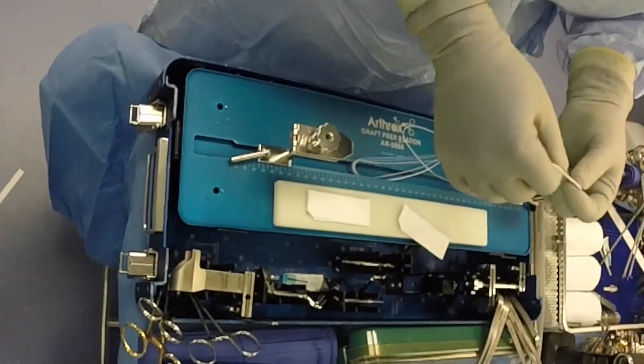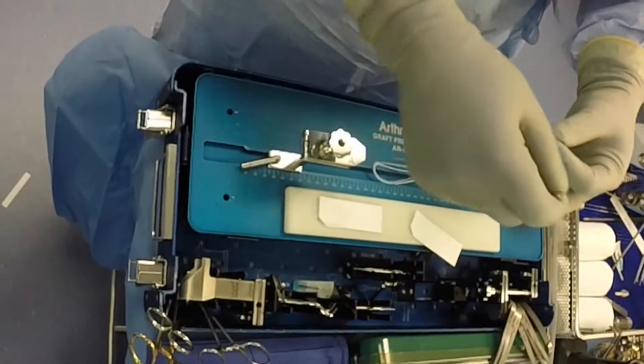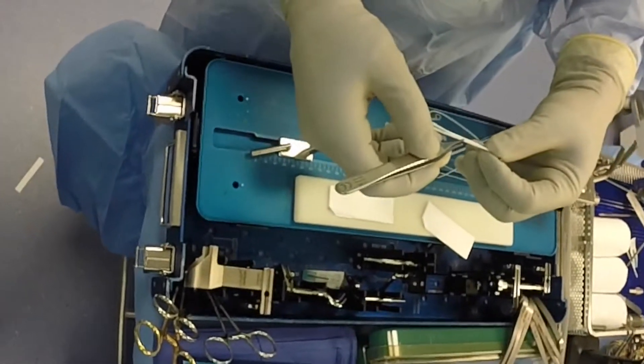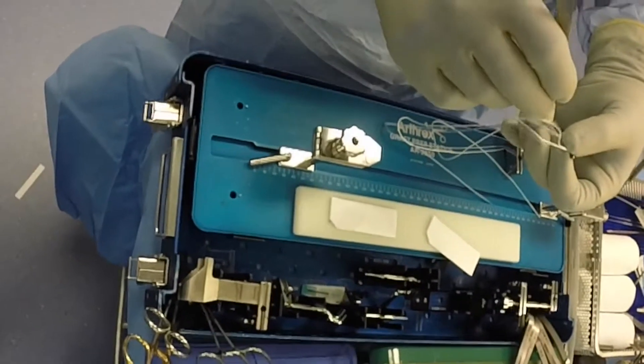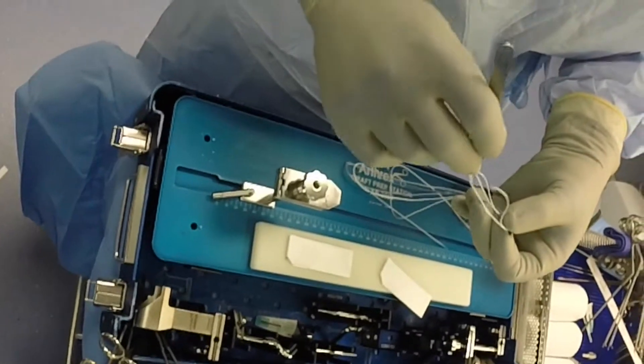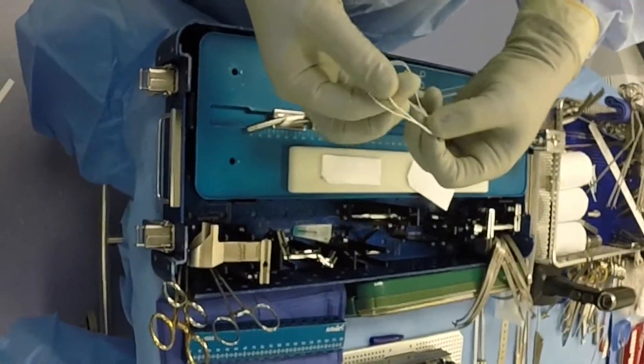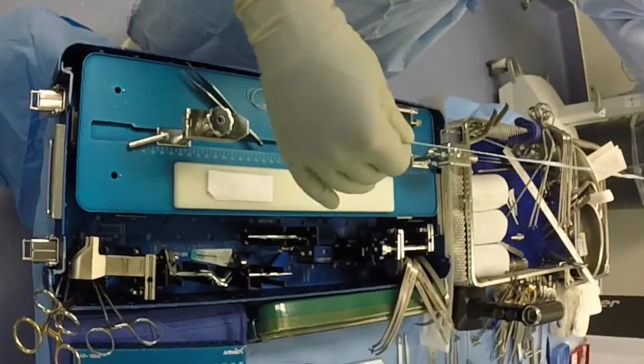The graft preparation begins by lengthening the TightRope RT fixation device loops to make it easier for graft passage. Once the first TightRope is lengthened, a FiberTape suture is secured.